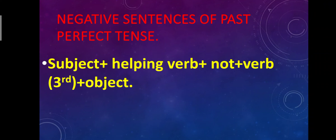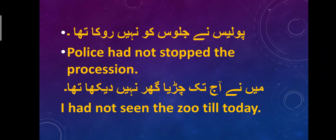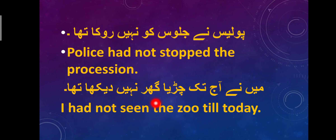Now negative sentences of past perfect tense. Structure: Subject plus helping verb plus not, third form of verb, plus object. Negative sentences are very easy — after the helping verb, just add 'not', then use the third form of the verb, then object. For example: 'Police ne juloos ko nahin roka tha' — Police had not stopped the procession. Subject, helping verb, not, third form of verb, then object. 'Maine aaj tak chidiya ghar nahin dekha tha' — I had not seen the zoo till today.